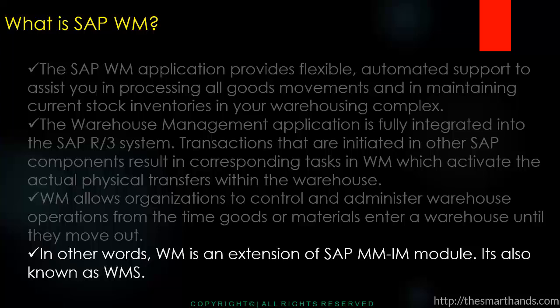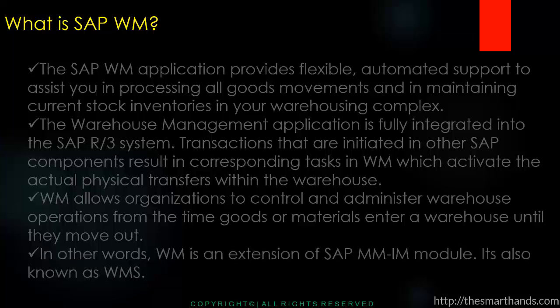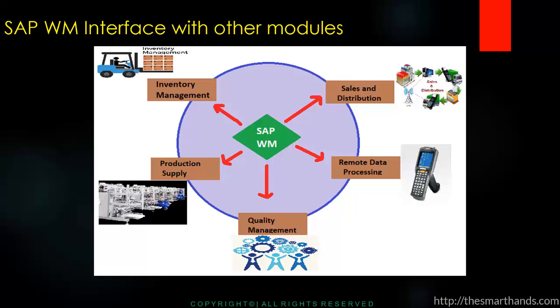WM is an extension of the SAP MM module, specifically the SAP MM inventory management module, and is also known as WMS — warehouse management system. The warehouse management system is interfaced with other SAP modules: primarily inventory management, which is the main integration point, and also production planning, where goods are supplied to the production area and received back from manufacturing.